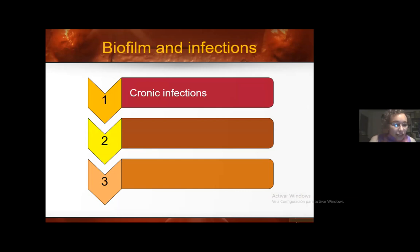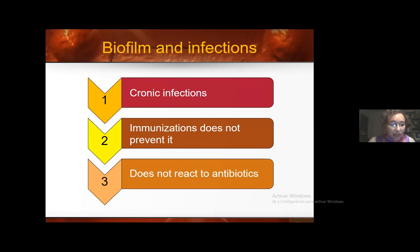Biofilms are associated with chronic infections. There are many vaccines protecting people against viruses and bacteria, but biofilms are not avoided by vaccines. The main problem is that antibiotics cannot reach the bacteria inside the matrix developed by the bacteria, because the pores are very small so the antibiotic molecules cannot enter.